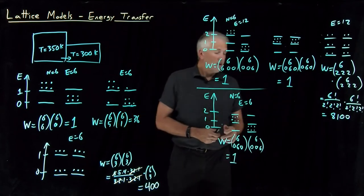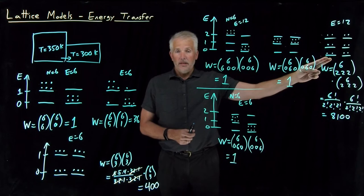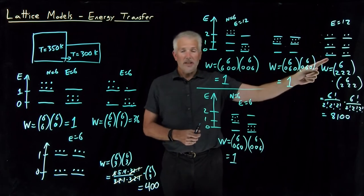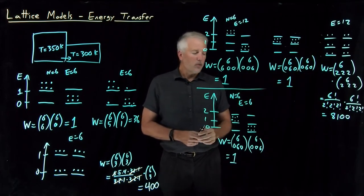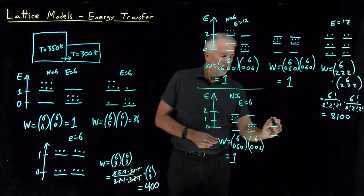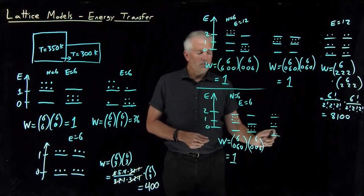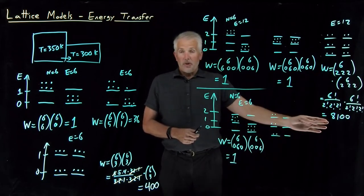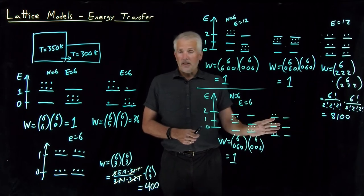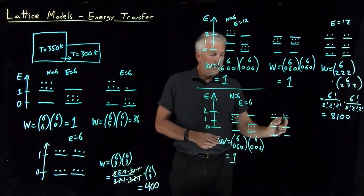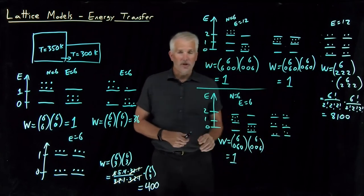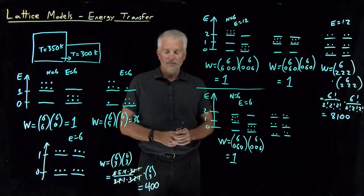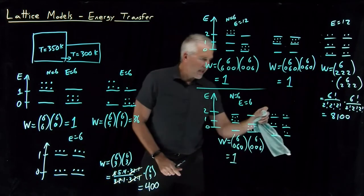Ask yourself what the most likely distribution of energies is going to be. If you chose the state with two molecules in each energy level on both sides — that's a state with high multiplicity, but it violates conservation of energy. That state uses 12 units of energy, and I can't get there because I only have six units. I'd have to promote more molecules than I can afford to pay for.